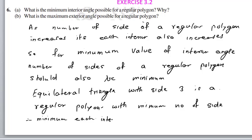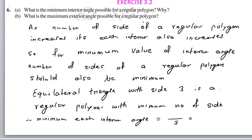Minimum each interior angle equals 180 divided by 3, which equals 60 degrees. So each interior angle is 60 degrees.